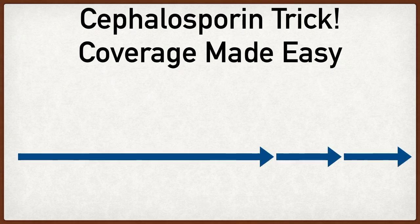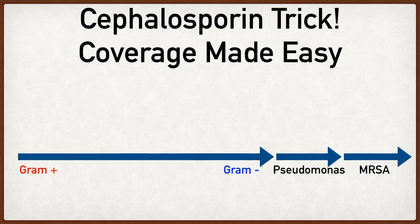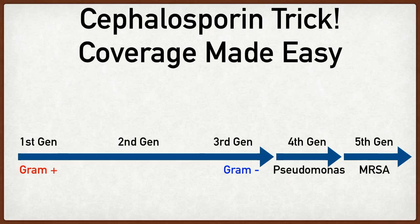The first thing you're going to do is make three arrows. The first arrow will go from gram positive to gram negative, the second arrow will be labeled pseudomonas, and the last one MRSA. Then we're going to plug in the generations, starting with the first and counting up to the fifth. The first arrow covers generations one through three, the second arrow covers the fourth generation, and the last one covers the fifth generation.